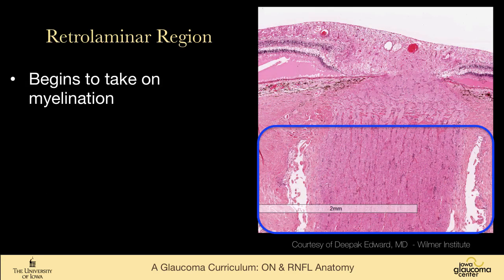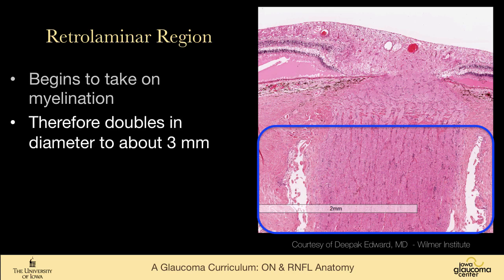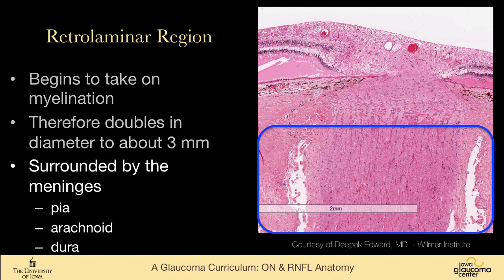As we move farther back into the retrolaminar region, the optic nerve begins to take on myelination and therefore doubles in diameter to about 3 millimeters. It is then surrounded by meninges — the pia, arachnoid, and dura.